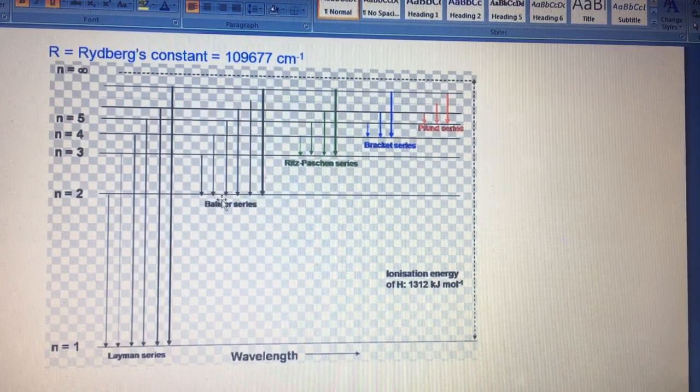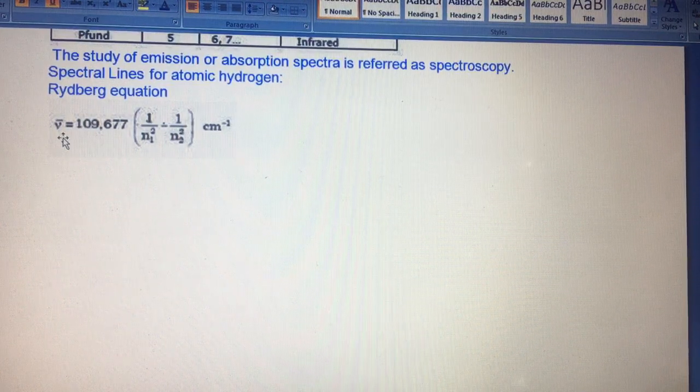You have to match all the lines. For example, 2 to 1, then 3 to 1, 4 to 1, 5 to 1, 6 to 1, and so on. Similarly in Balmer, 3 to 2, 4 to 2, 5 to 2, 6 to 2. This way you draw the lines. These series show wavelengths. For this, Rydberg gave a formula. Through the Rydberg equation, he said we can calculate the wave number of any absorbed wave.